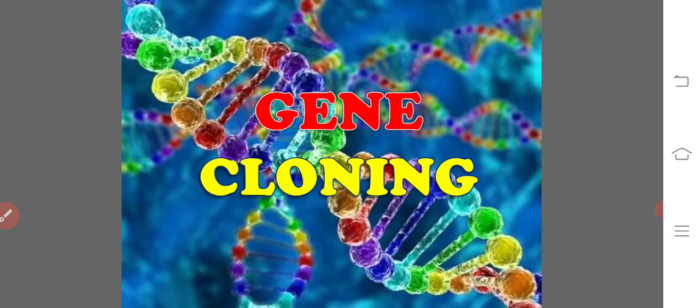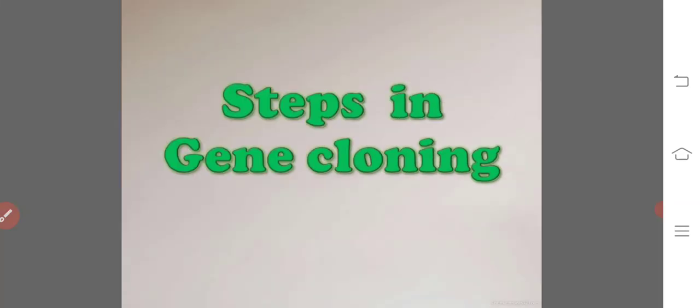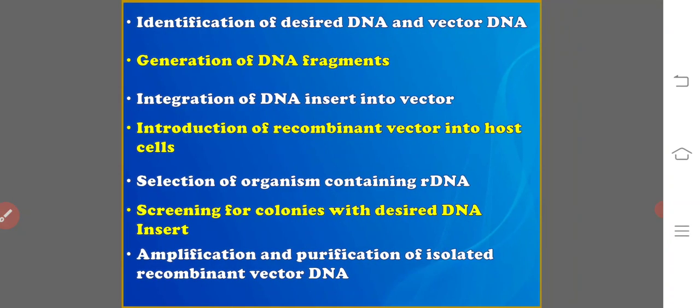Gene cloning is the production of exact copies of a particular gene or segment of DNA using genetic engineering techniques. The insertion of fragments of DNA carrying a gene into a cloning vector and subsequent propagation of recombinant DNA molecules into many copies is known as gene cloning. The process is classified into seven steps.